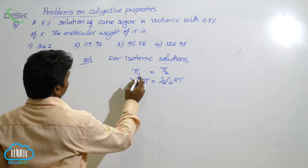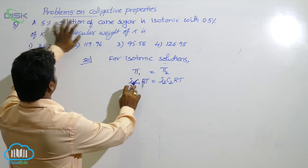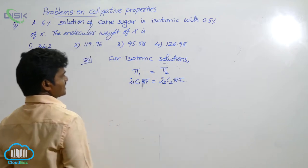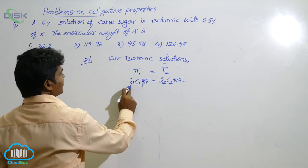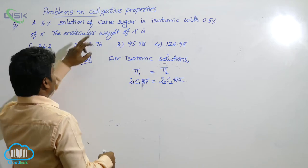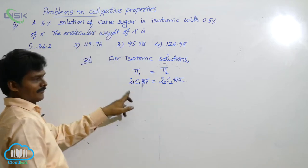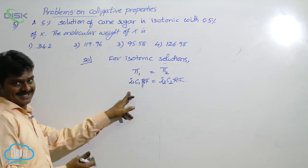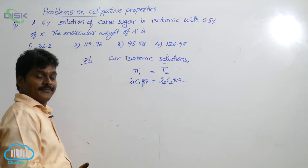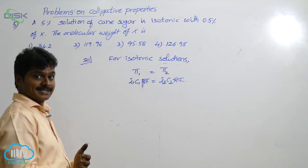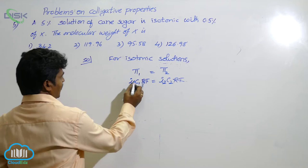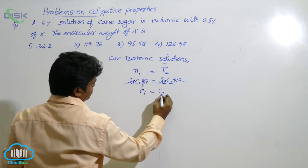So, let it be for first one for cane sugar. RT gets cancelled. Next I1 C1. Here for X solute, we know that for cane sugar, Van't Hoff factor I1 is 1 because it is non-electrolytic. About X, information is not given. If information is not given, consider its Van't Hoff factor as one. So, I1 is 1, I2 is 1. So, C1 equals to C2.